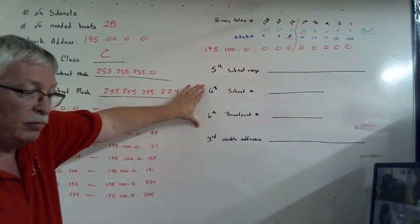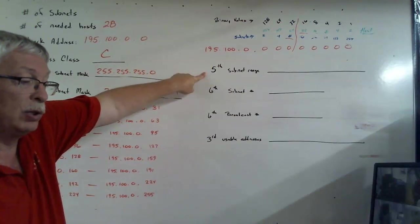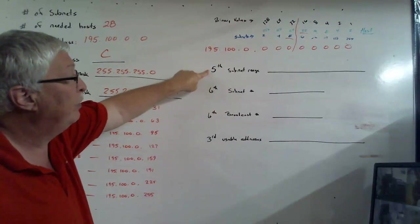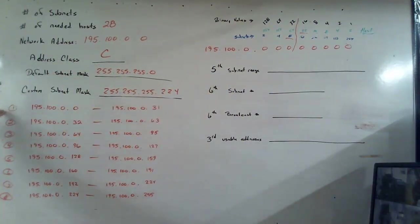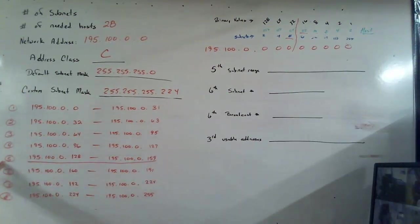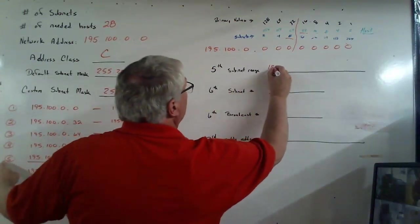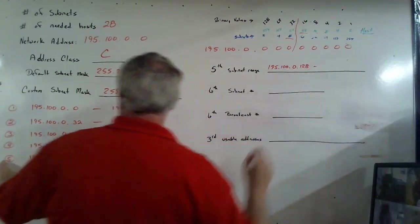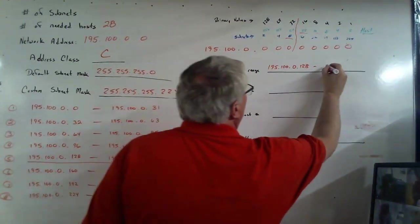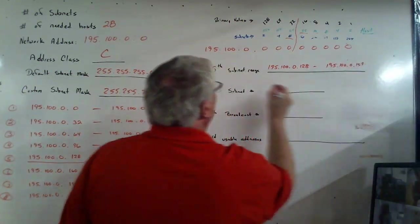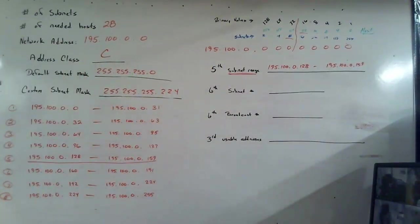The ranges are what we're looking for. And the very first one wants to know, what's the subnet range, which means the entire thing, for the fifth subnet. So, if we come down here, 1, 2, 3, 4, 5, we want this whole thing. So, 128 is the first number. So, 195.100.0.128, all the way to 159, 100.0.159. Remember, subnet range means the entire thing.